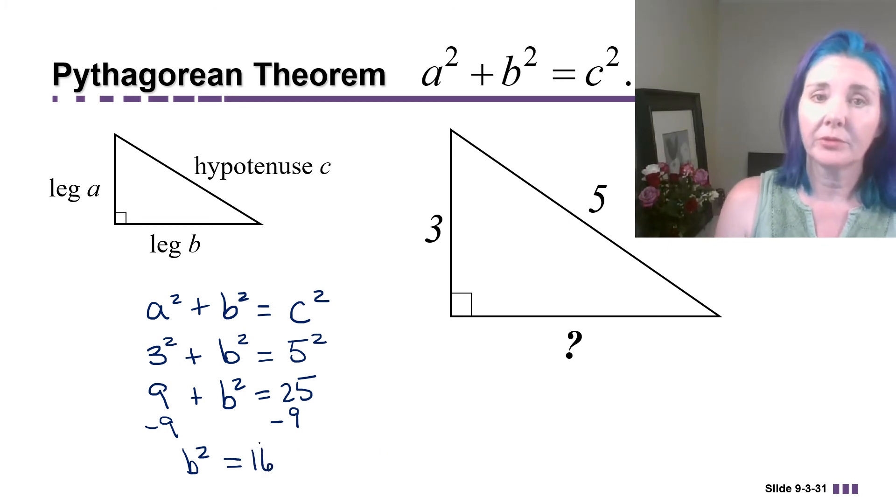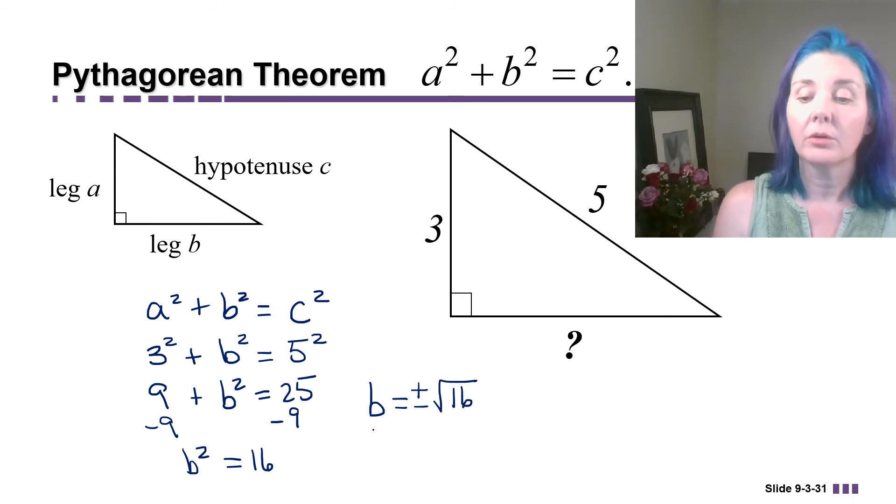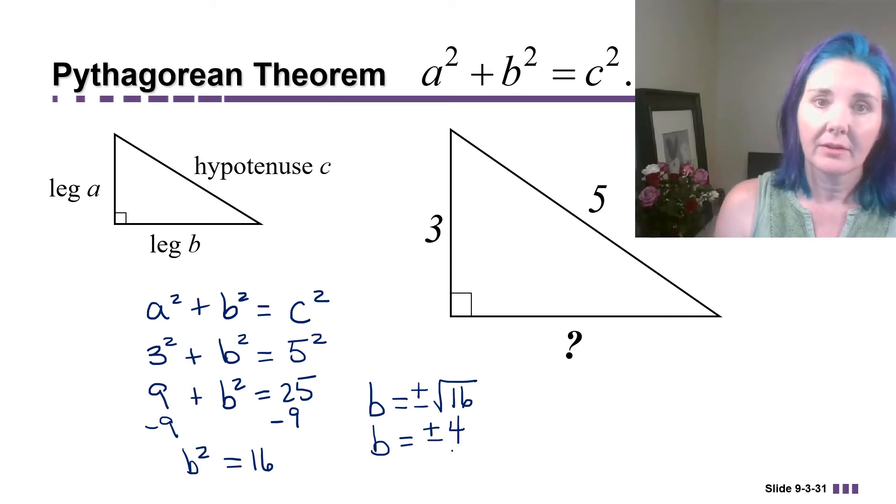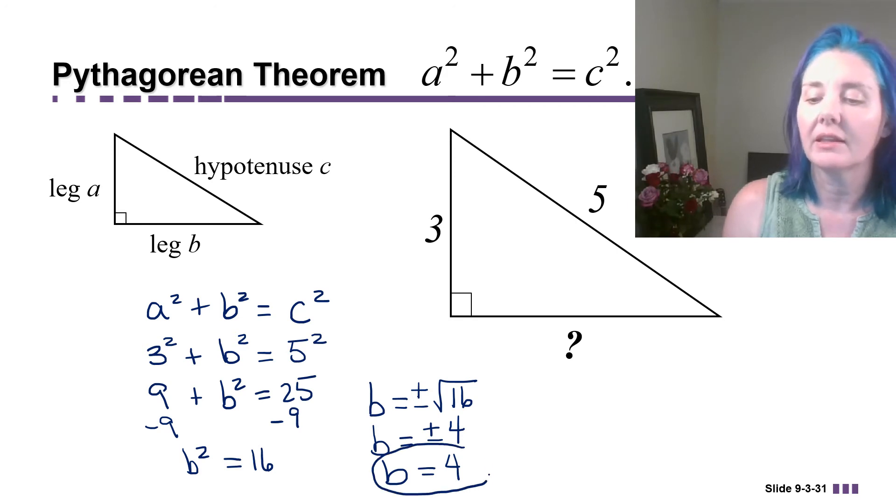Now that I have a variable squared equal to a number, that's in the form to use the square root property. So we know that b has to be either positive or negative square root of 16, which means b is positive or negative 4. But this is a length of a side of a triangle. It's not ever going to be negative. So that means that we can disregard the negative possibility and just say that that third side is length 4.